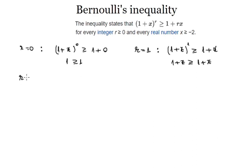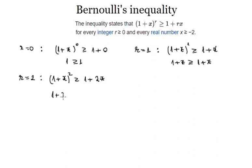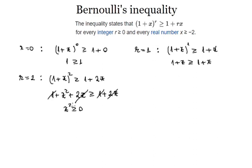Let's test the statement one more time to see what happens if r equals 2. We get 1 plus x to the power of 2 is greater than or equal to 1 plus 2x. Using the (a+b)² formula, we expand: 1 plus x squared plus 2x. We need this to be greater than or equal to 1 plus 2x. Cancelling like terms from both sides, the inequality reduces to x squared is greater than or equal to 0, which is true for any real value of x.